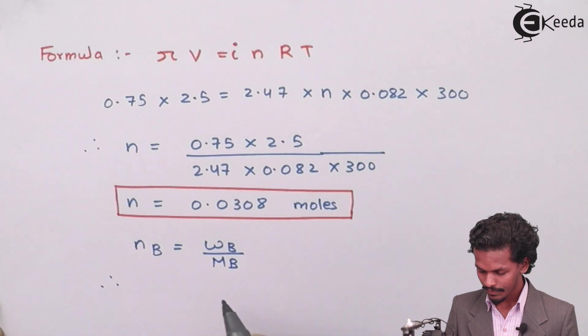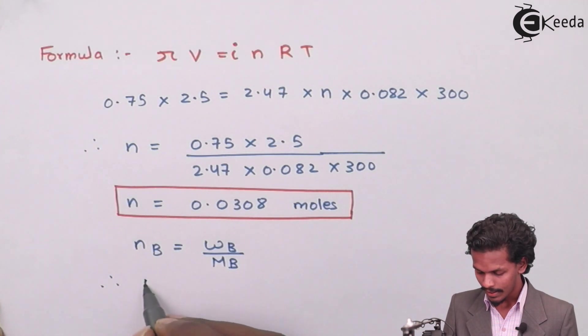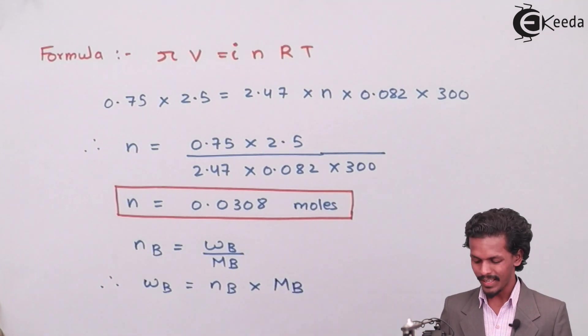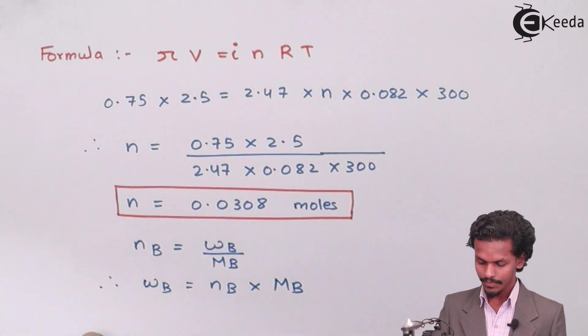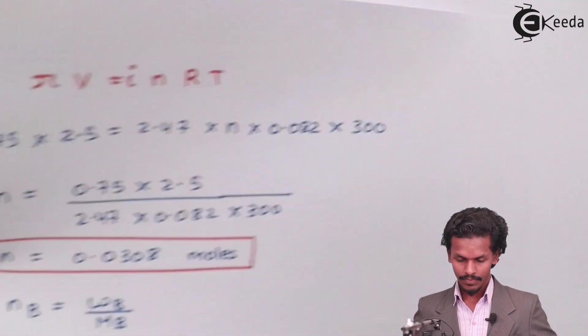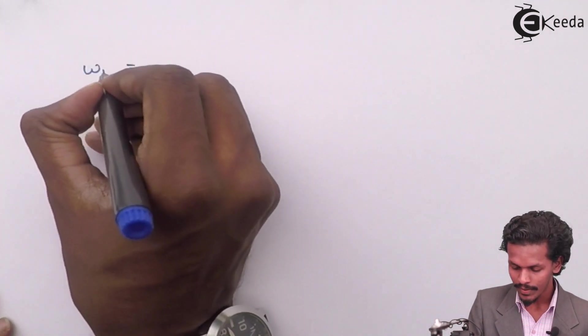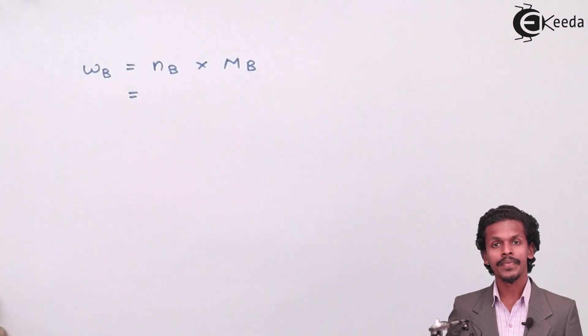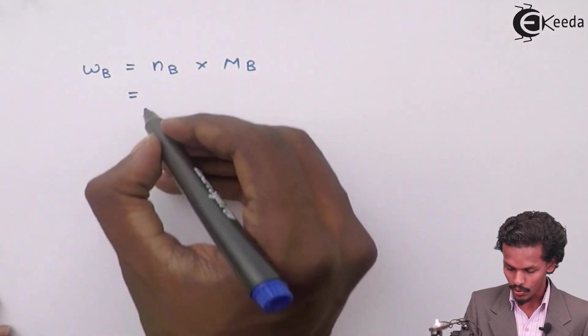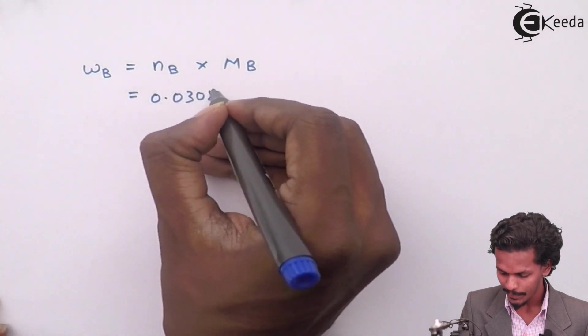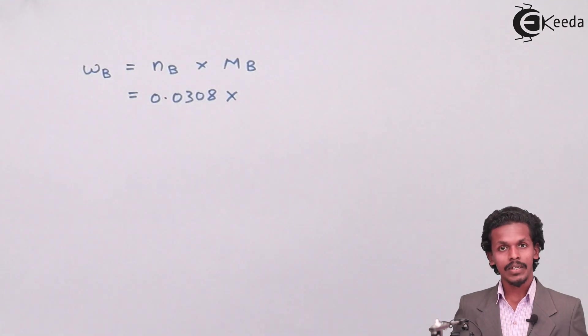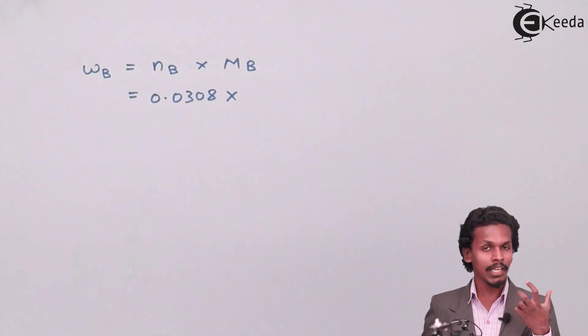We know that nB is equals to WB upon MB. Therefore, WB will be nB into MB. Now we could substitute the value of nB into MB.